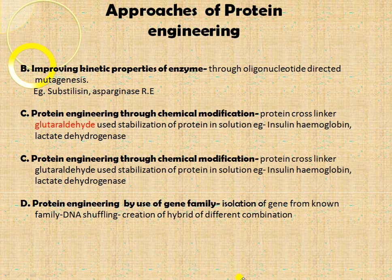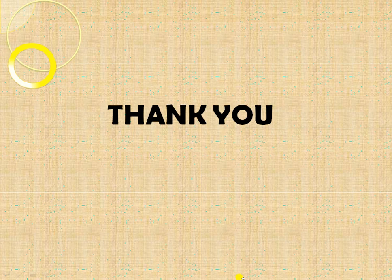Protein engineering by use of gene family isolation: genes from a known family are taken, DNA shuffling is performed, and a bi-hybrid of the protein is created through combination within the same family — you take proteins from the same family, hybridize them, and form newer proteins or proteins with improved properties. This is all about protein engineering. Thank you.